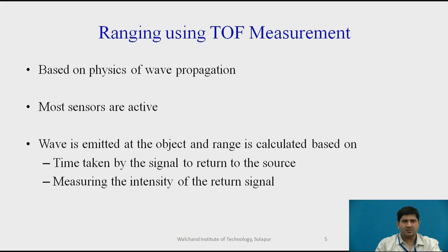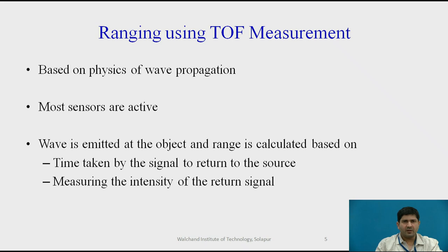How is time of flight typically implemented? It is simple — it is based on the physics of wave propagation. Most sensors involved in range measurement are active sensors. Passive sensors are used too, but if you want greater control, active sensors are definitely preferred. The process is straightforward: a wave is emitted at the object from the sensor, and the range is calculated based on the time taken by the signal to return to the source or by measuring the intensity of the return signal.